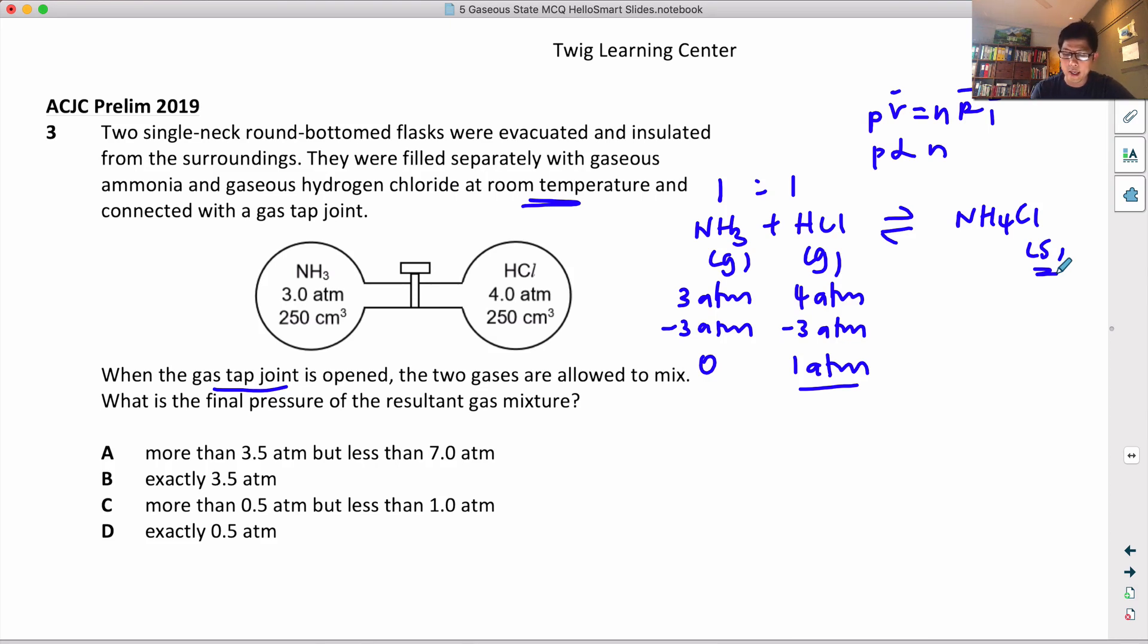Because we're talking about the pressure, we're only looking at the gases. If there's no change in volume, the pressure will in the end be 1 atm.